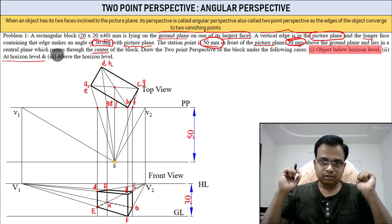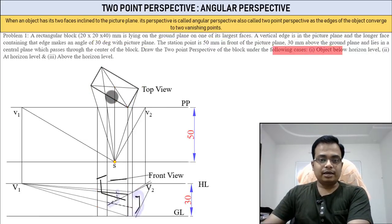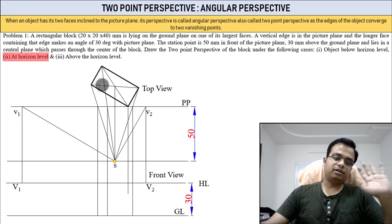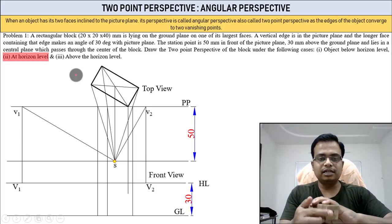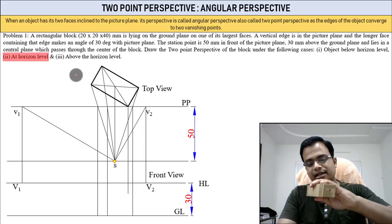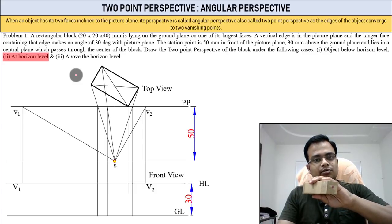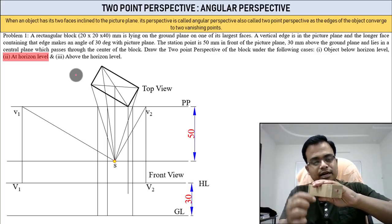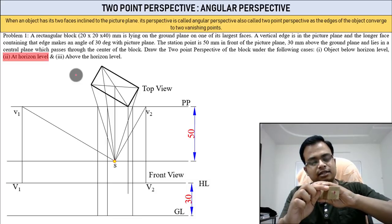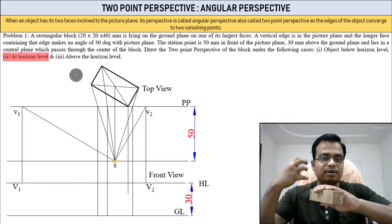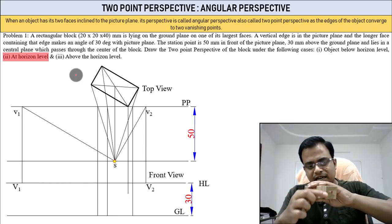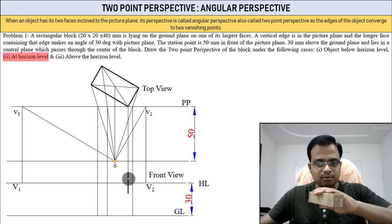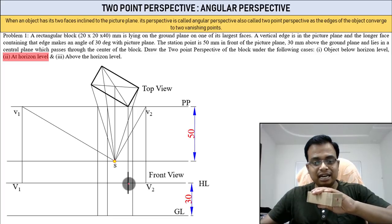Case two: at the horizon level. Everything remains the same — all setups are identical. This vertical edge is now at a slightly higher position; it's not on the ground plane but at a certain height. It's still in the picture plane, so its true shape will be seen. Half of it is above the horizon line and half below — 10 mm above and 10 mm below.